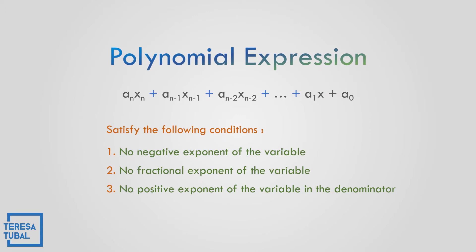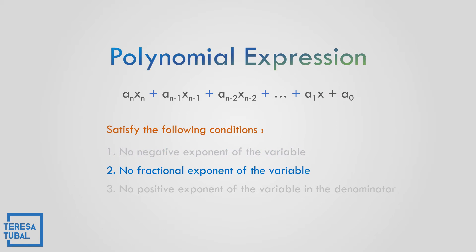Polynomial expressions satisfy the following conditions. First, there should be no negative exponent of the variable. Second, no fractional exponent — so it means no 1/2, 1/4, or 1/5 in the variable. And third, no positive exponent in the denominator.